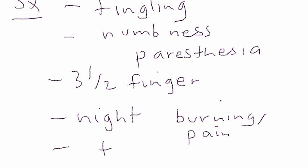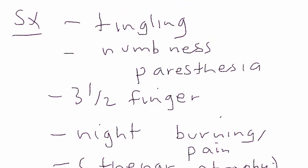If it's very severe, the patient can develop something called thenar atrophy, which involves the area where it becomes very difficult to do any opposition or abduction of the thumb on that hand. But that's only in severe cases. How do you diagnose it?